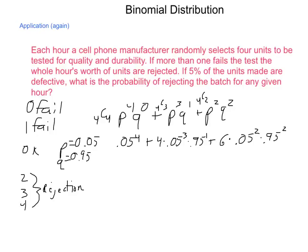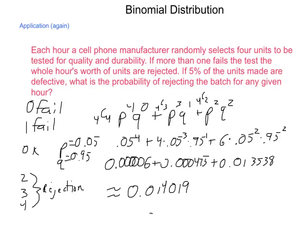Multiplying these out, 5% to the 4th is 0.000006. 4 times the next one we have 0.000475, and 6 times our last item will be 0.013538. Adding those individual probabilities together we come out with it being approximately 0.014019 or about 1.4% of the time. So the likelihood that this manufacturer is going to reject an entire hour's worth of production because of the quality control tests will actually happen only a little less than 1.5% of the time.